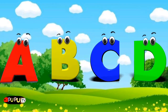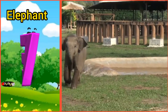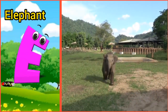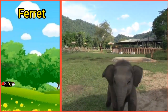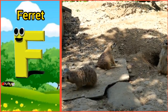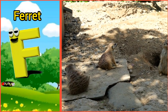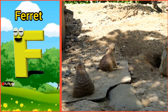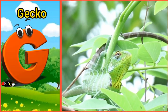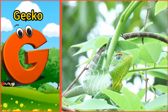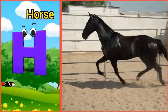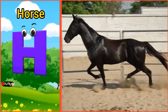E is for Elephant. F, F, F. G is for Gecko. G, Gecko. H is for Horse. Ha, Ha. Horse.